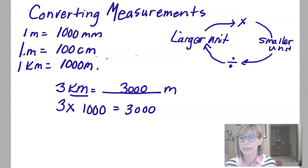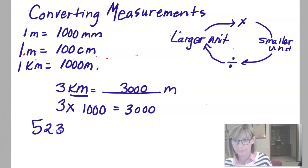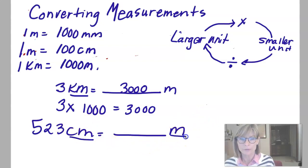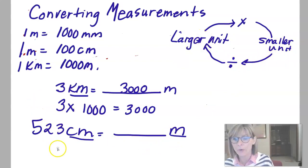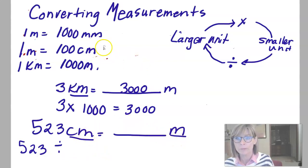Alright, so we're going to start with the problem 523 centimeters and we're going to change that into meters. I know that I'm changing from a smaller unit — centimeters — to a larger unit, so I know I'm going to need to divide. So I'm going to have 523. Now what do I divide by? I'm thinking to myself, how many centimeters are in a meter?